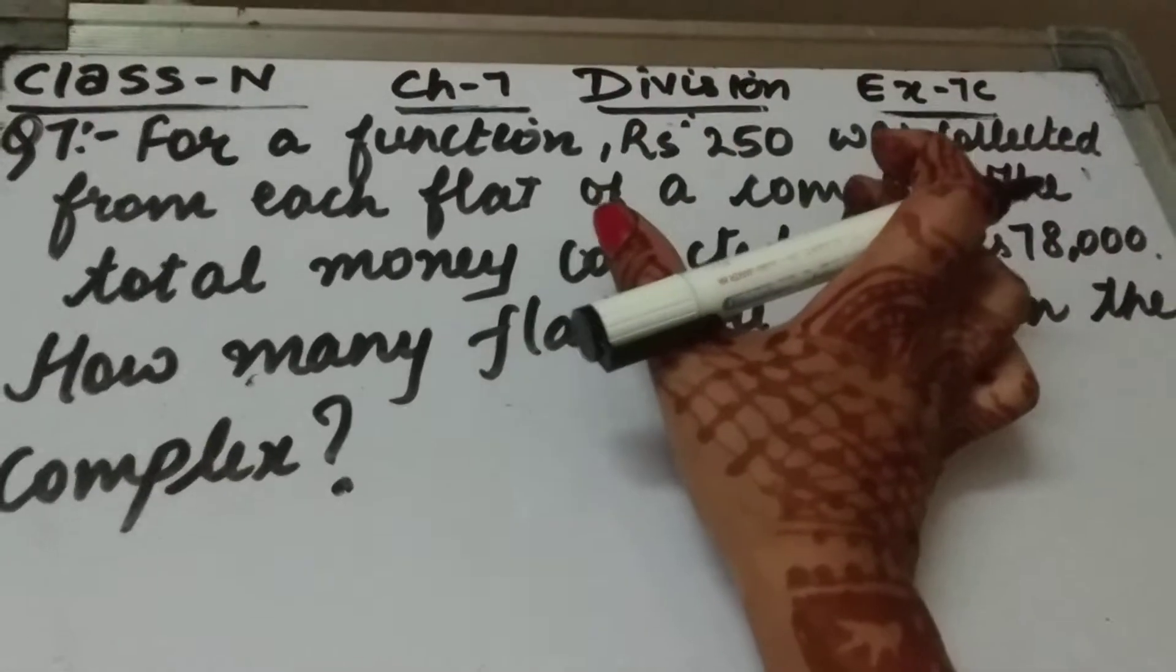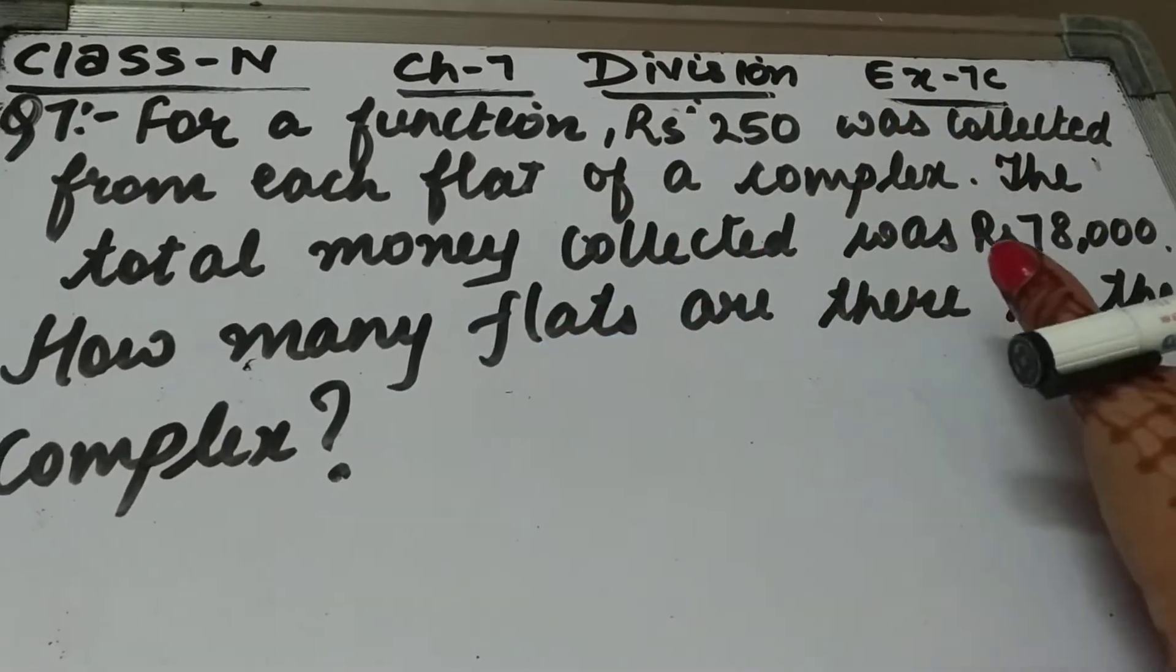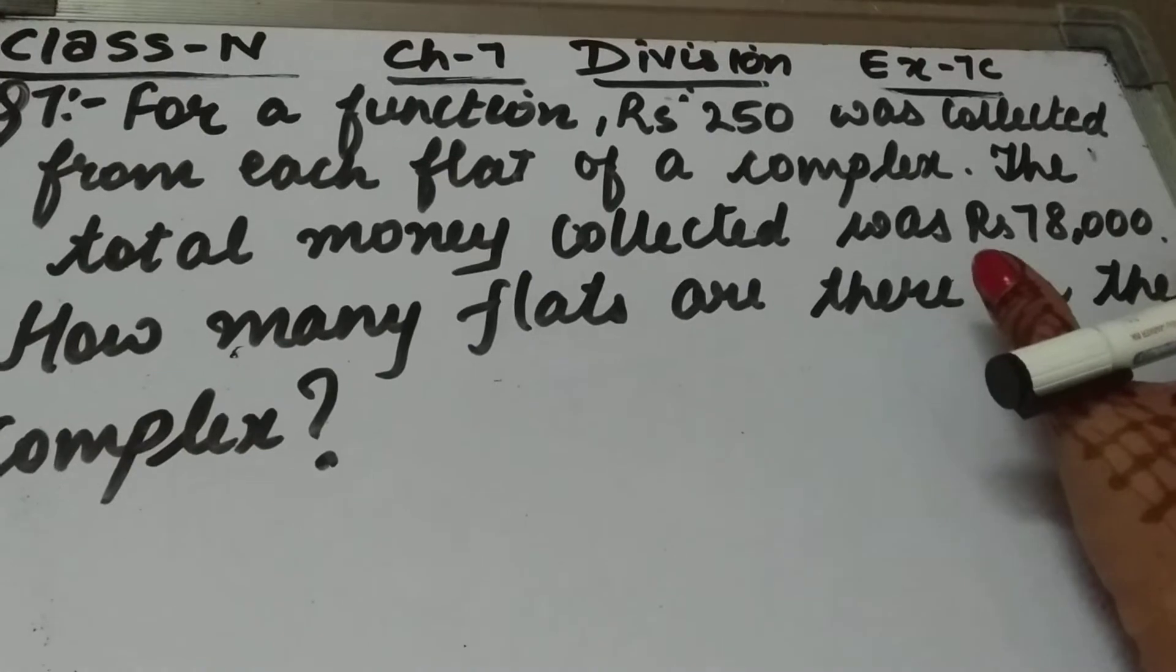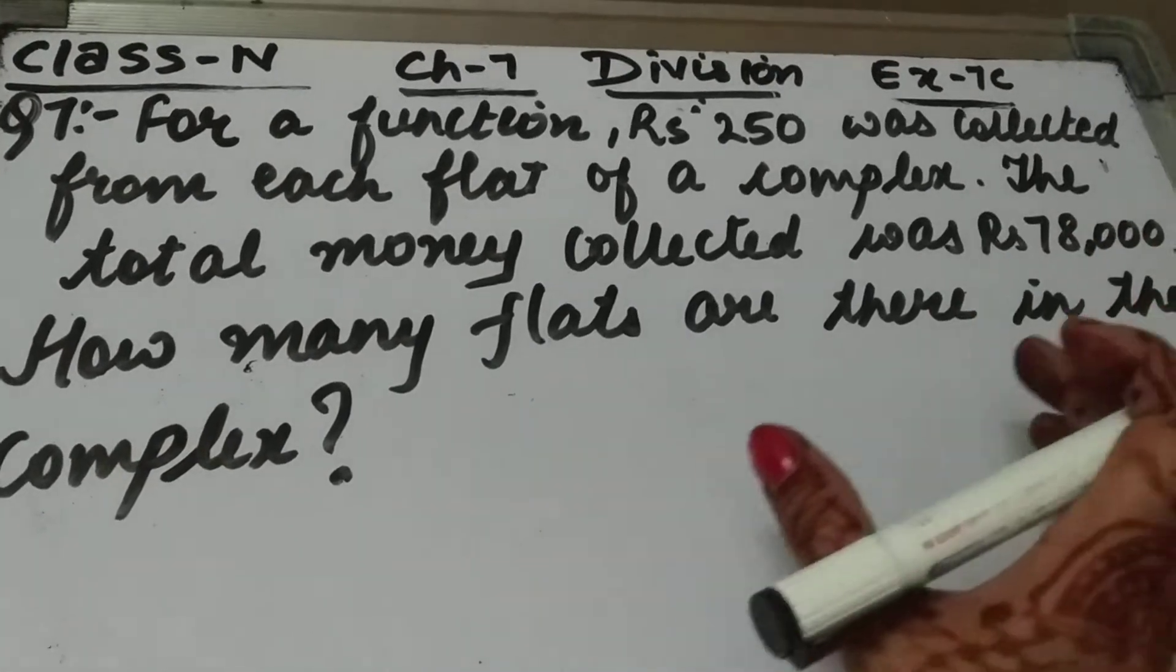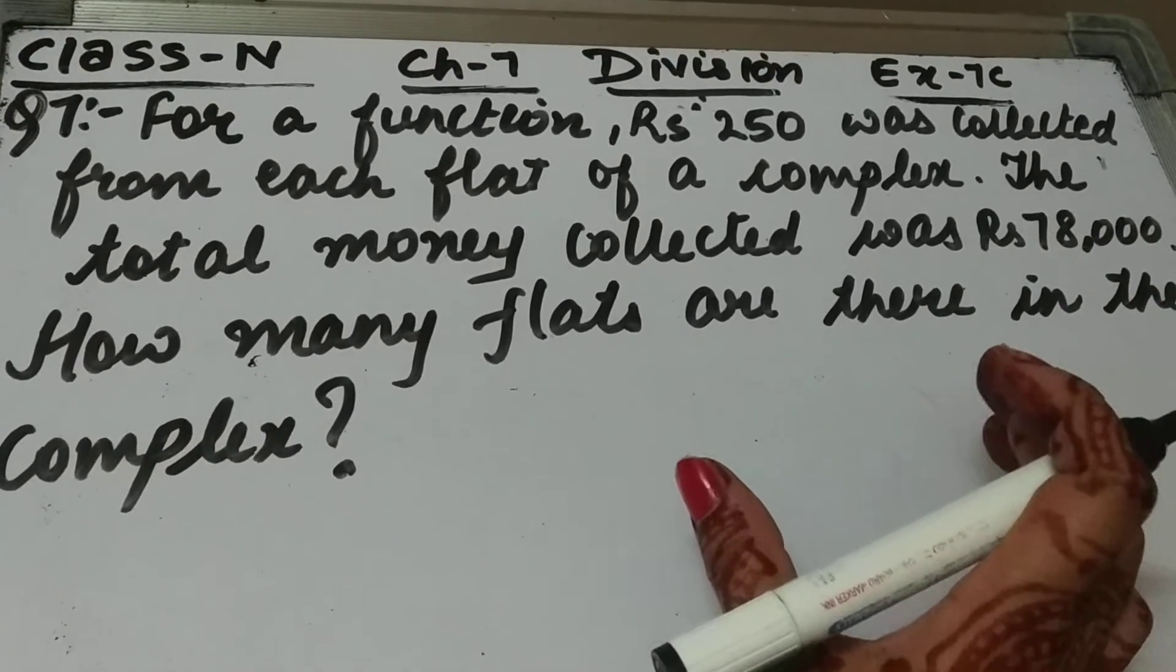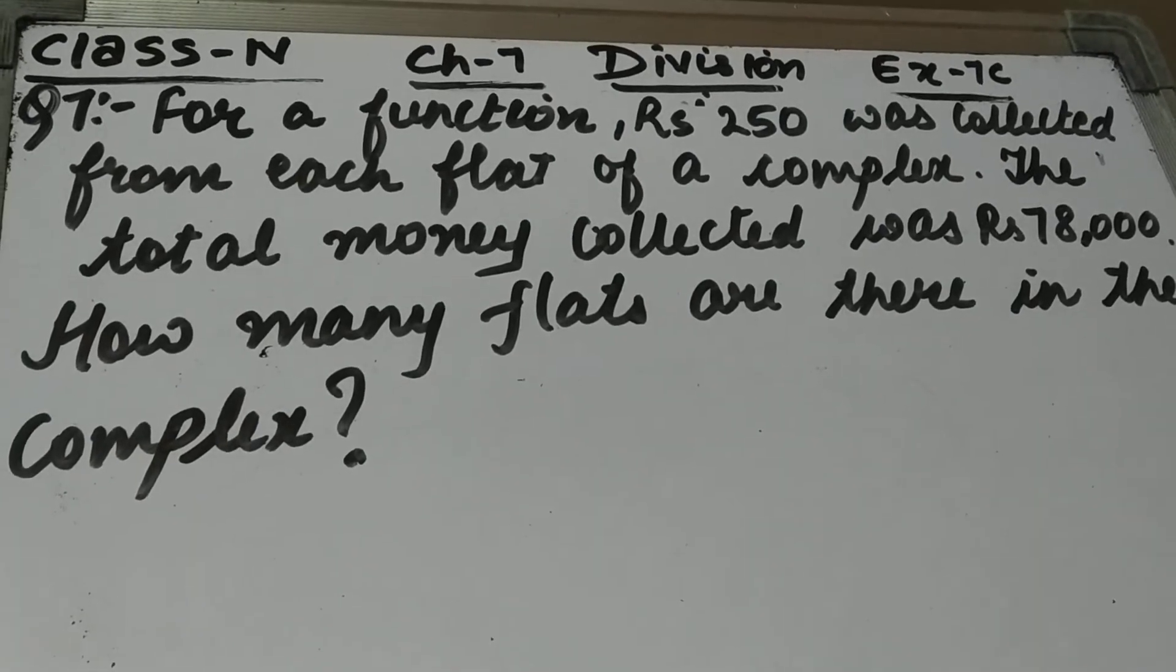Her flat se 250 rupees collect kiye gai or total money jo hai, wo kitne collect ki gai? 78,000. To hamei yeh batana hai ki vahaan per kitne, us complex ke andar kitne flats hain. This we have to find out. So let's start the solution.